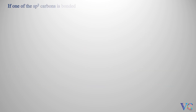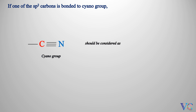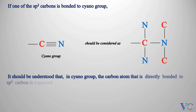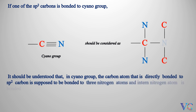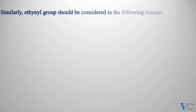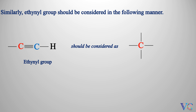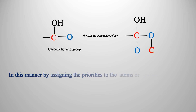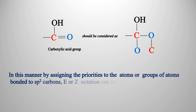If one of the sp2 carbons is bonded to a cyano group, the cyano group should be considered as triplicated — it should be understood that in the cyano group, the carbon atom directly bonded to the sp2 carbon is supposed to be bonded to three nitrogen atoms, and in turn the nitrogen atom is bonded to three carbon atoms. Similarly, the ethinyl group should be considered in the following manner. The carboxylic acid group should be considered as duplicated accordingly. In this manner, by assigning the priorities to the atoms or groups of atoms bonded to the sp2 carbons, E or Z notation can be assigned.